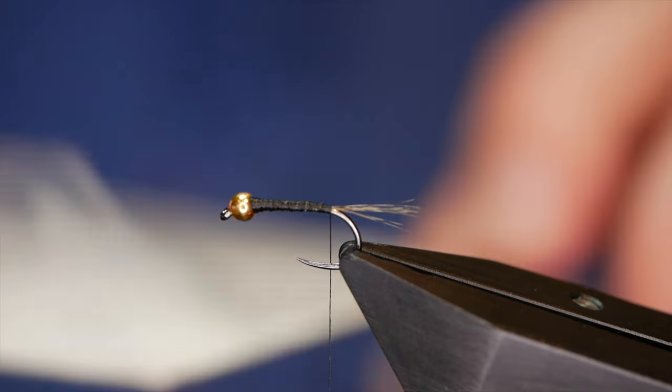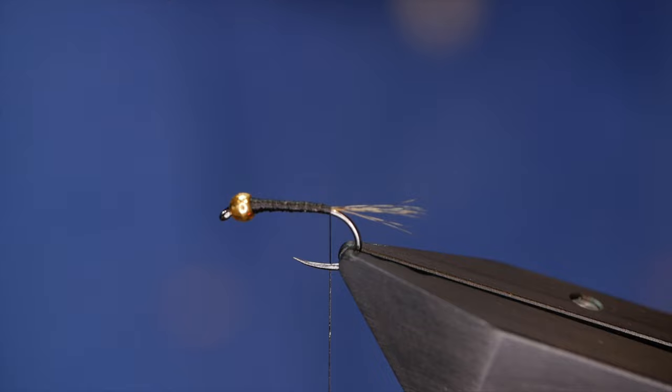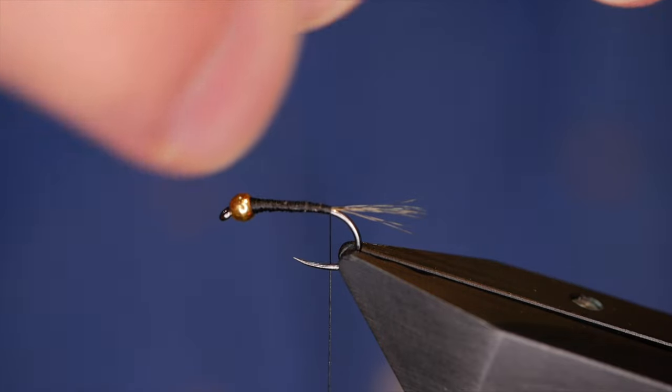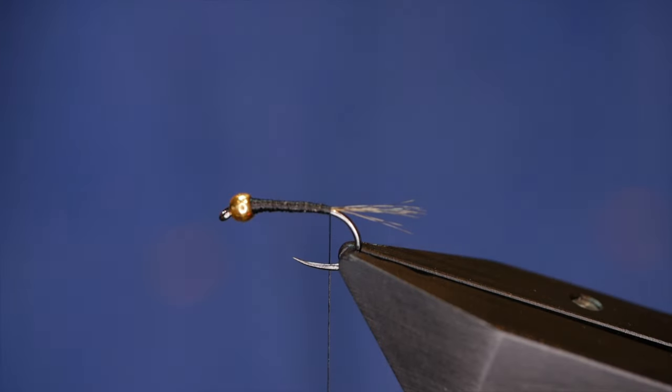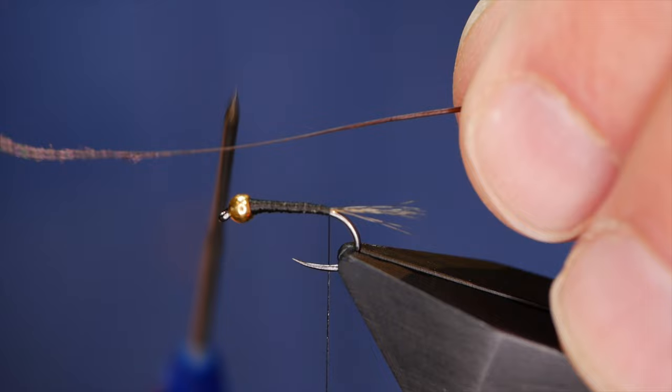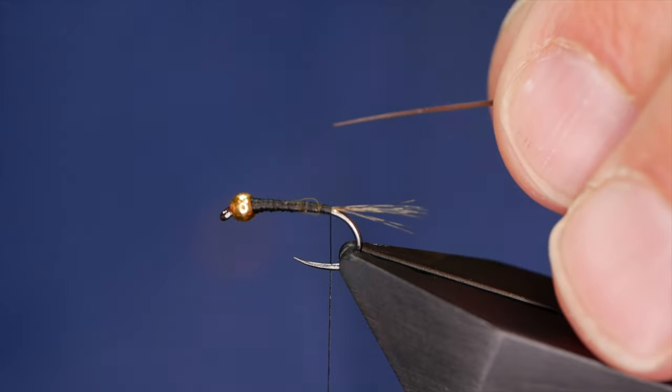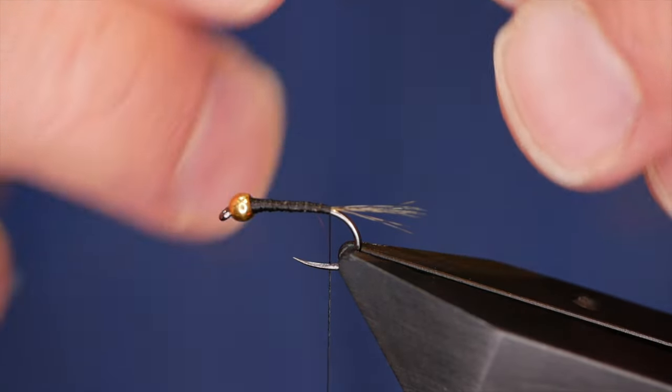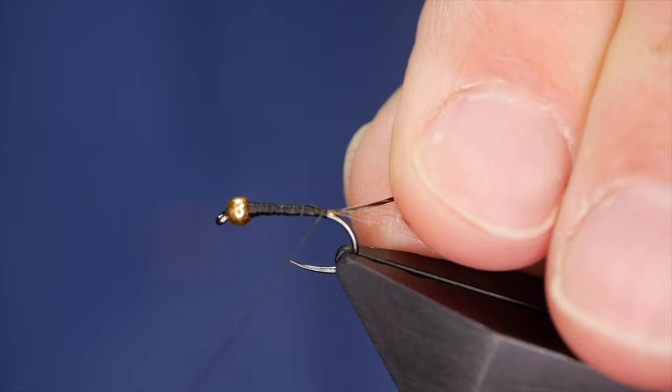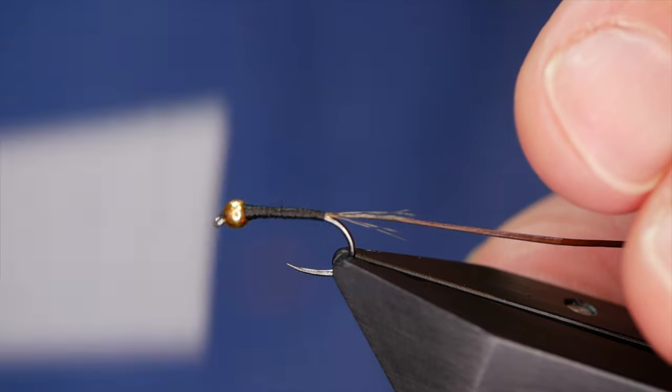Next I'm coming in with some stripped peacock herl, this one's been dyed brown. I like the brown, gives a very pleasing effect. When you take these dyed ones out I like to give them a little damp down with my tongue and I don't want the really thin bit, so I'll come in with my snips.